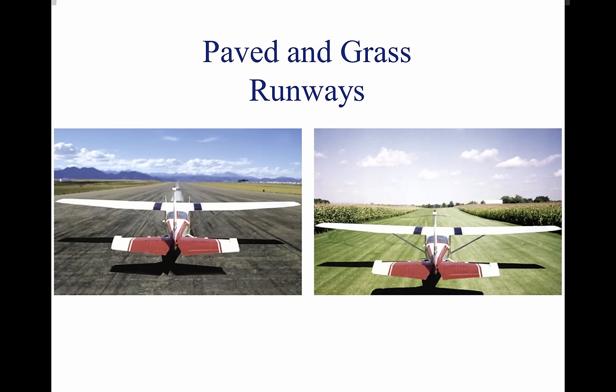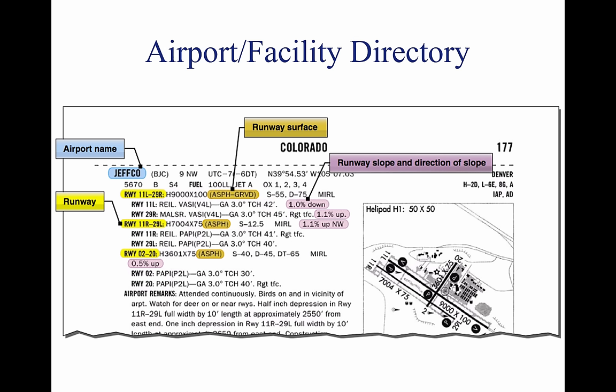Braking effectiveness is another consideration when dealing with various runway types. The condition of the surface affects the braking ability of the aircraft. The gradient, or slope, of the runway is the amount of change in runway height over the length of the runway, expressed as a percentage such as a 3% gradient — meaning that for every 100 feet of runway length, the runway height changes by 3 feet. A positive gradient indicates the runway height increases; a negative gradient indicates the runway decreases in height. An up-sloping runway impedes acceleration and results in a longer ground run during takeoff, but landing on an up-sloping runway typically reduces the landing roll. A down-sloping runway aids acceleration on takeoff, resulting in shorter takeoff distances, while landing on a down-sloping runway increases landing distances. Runway slope information is contained in the AFD.